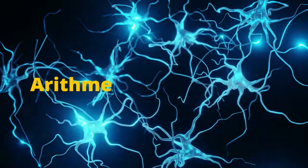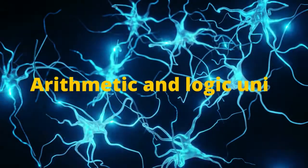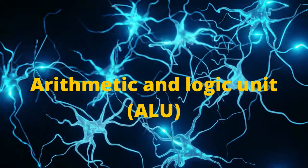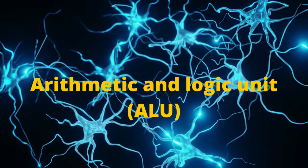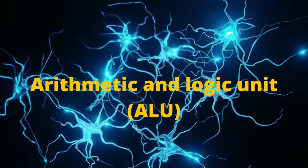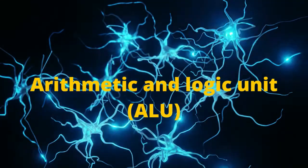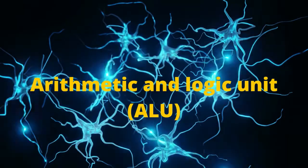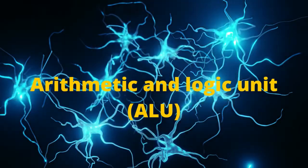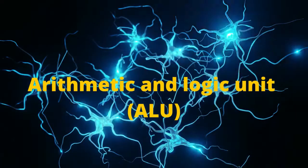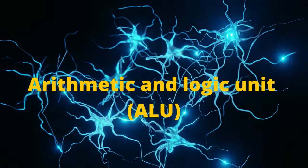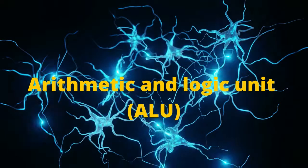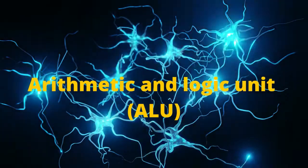From the Control Unit, we get to the Arithmetic and Logic Unit. The ALU is that part of a system where the actual execution of instructions takes place during processing operations. All calculations are performed there — even basic arithmetic operations like subtraction, multiplication, addition, and division — and logic operations are all performed here.